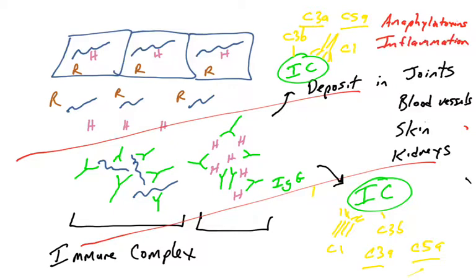And now that you have C5A, that's also an anaphylatoxin. And if you recall, anaphylatoxins induce inflammation and recruit immune cells to these sites. And inflammation is going to be bad if these sites where these immune complexes cluster have repeated inflammation.